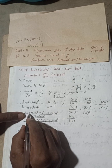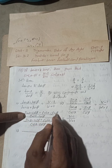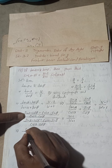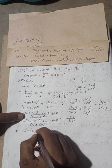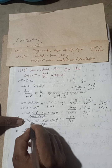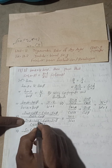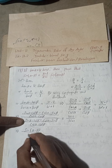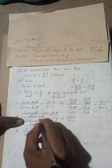Now, sin A · cos B − cos A · sin B is the formula for sin(A − B), so this is sin(α − β). Similarly, sin A · cos B + cos A · sin B is the formula for sin(A + B), so this is sin(α + β). Therefore we have sin(α − β) / sin(α + β) = (k − 1)/(k + 1).